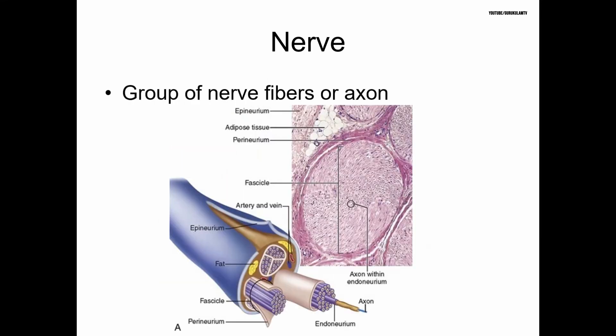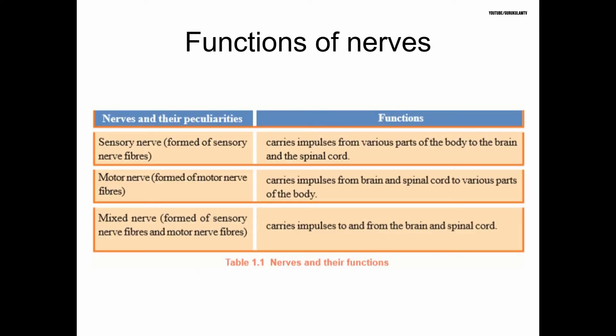A nerve is a group of nerve fibers. The functions of nerves: the sensory nerve carries impulses from the body to the brain. The motor nerve carries responses from the brain to the body. There are also mixed nerves, which carry both sensory and motor signals.